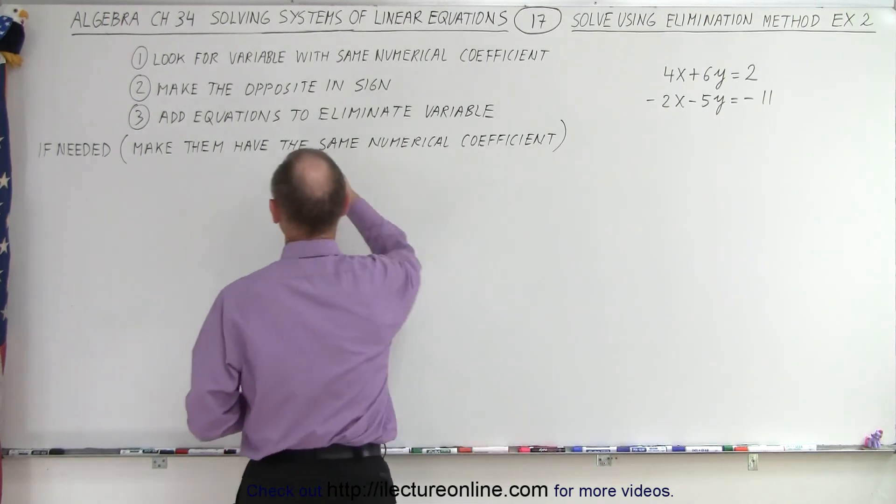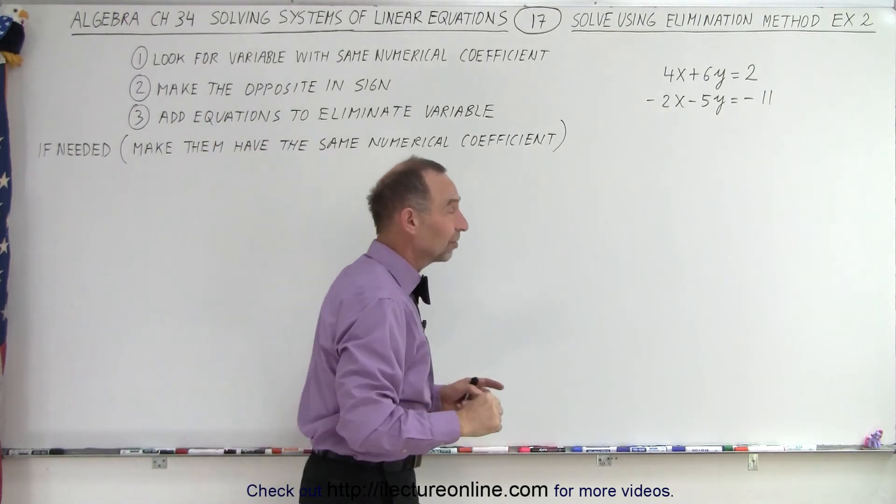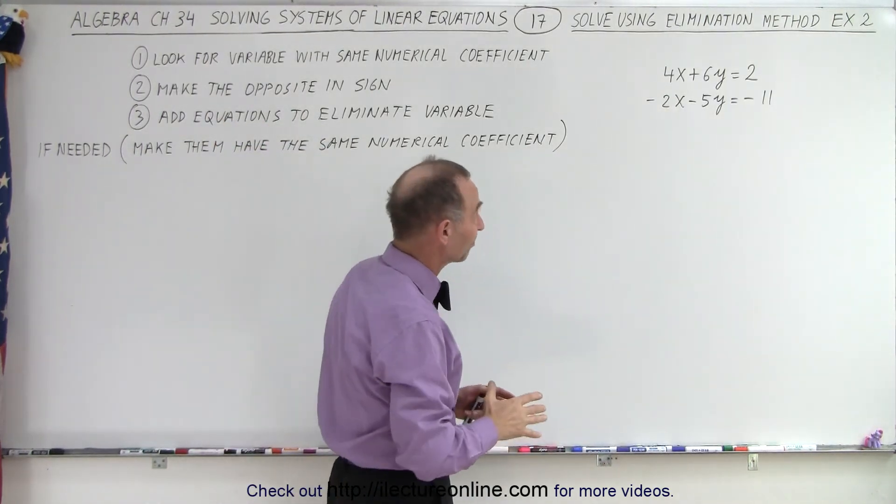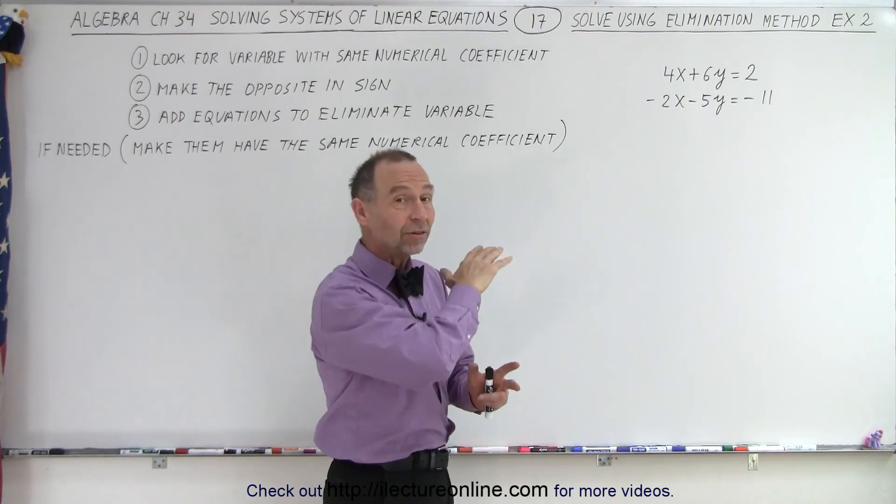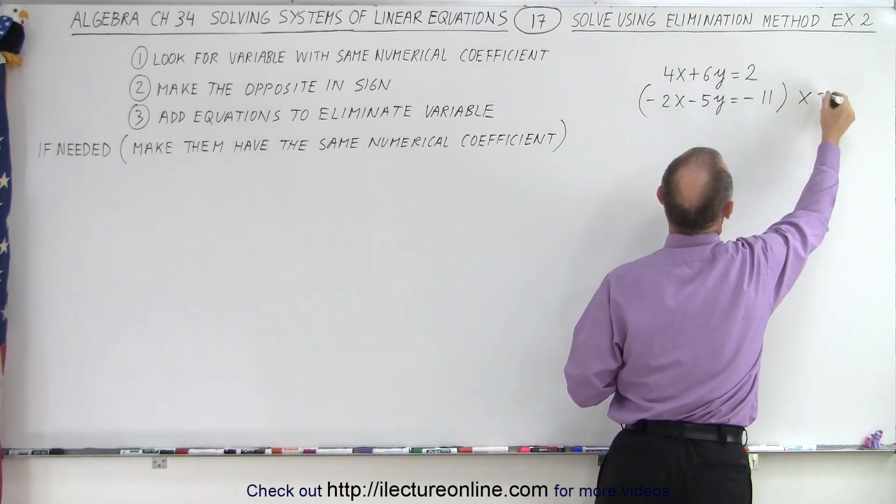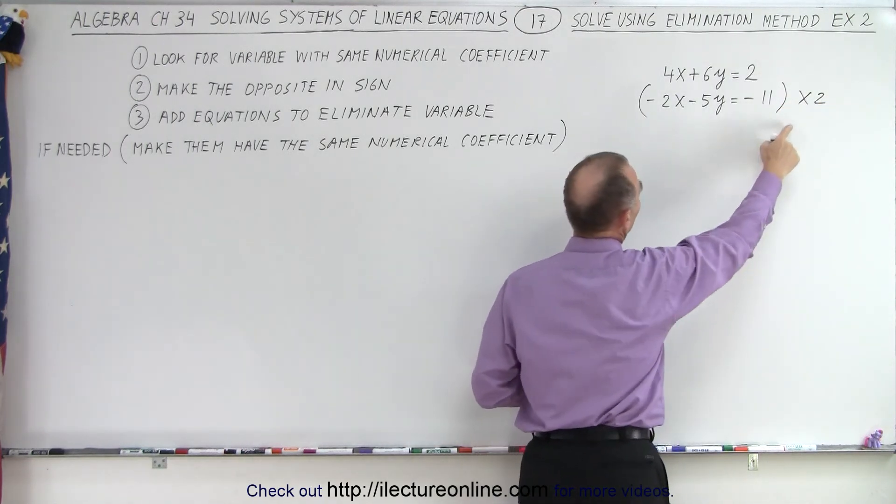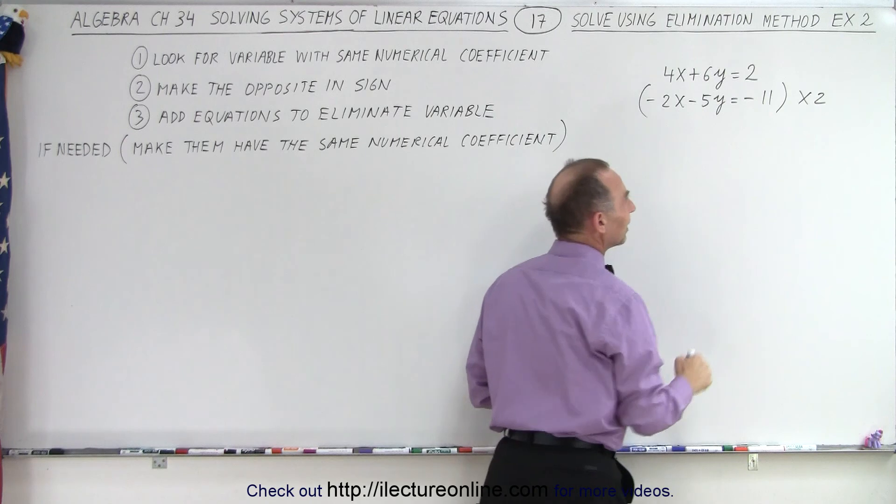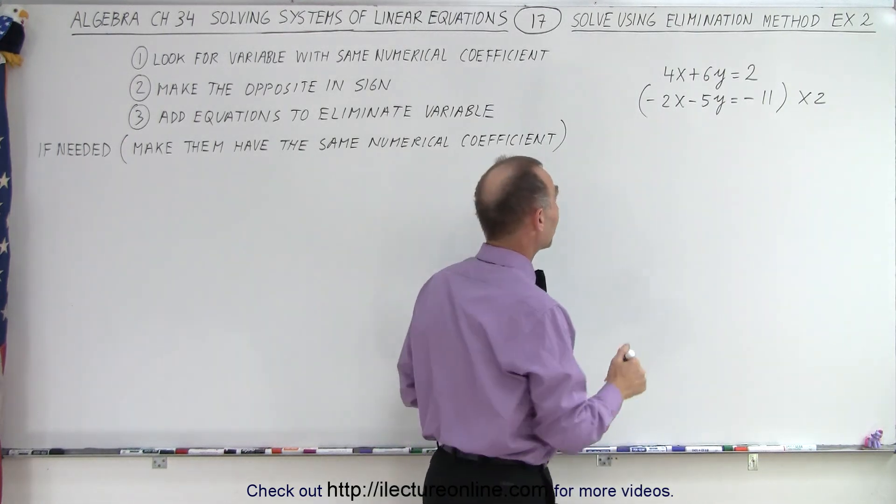And step number 2, they have opposite signs. So in a way, I'm getting two flights with one swat, so to speak. So what I'm going to do is multiply both sides of the equation by 2. So notice I do it to the left side and the right side so that way it is still the same equation.